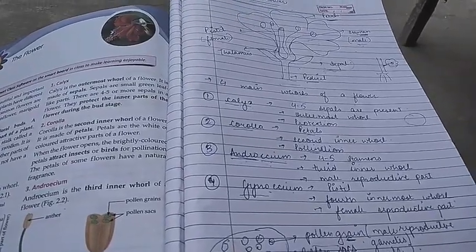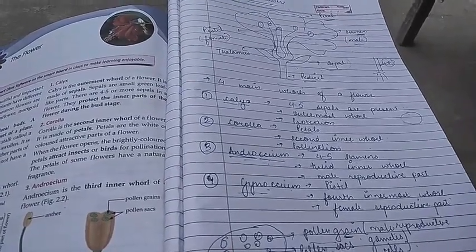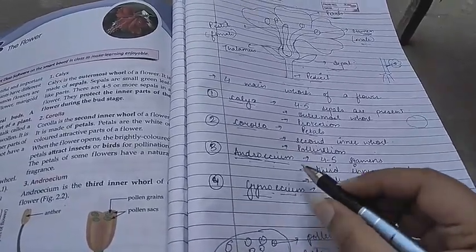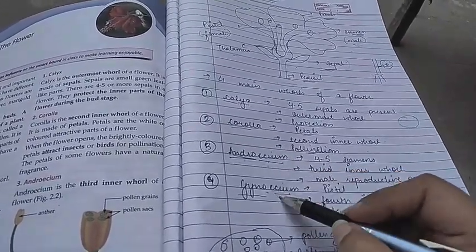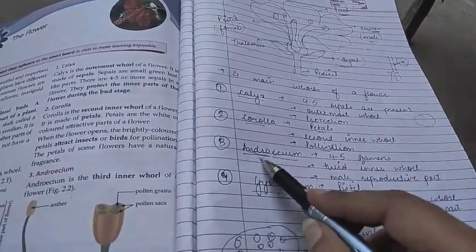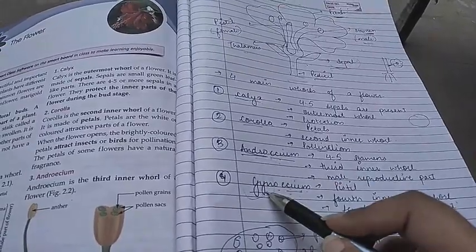Gynoecium is spelled G-Y-N-O, which is used for female words, and E-C-I-U-M. The 'ecium' part is common in both androecium and gynoecium. Only the spelling of andro and gyno are different.